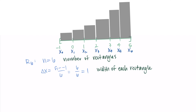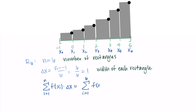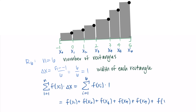The right Riemann sum formula is the sum from i = 1 to n of f(xᵢ) · Δx. We expect to use the right endpoints, so we don't use x₀ but we use the rest. Filling in: sum from i = 1 to 6 of f(xᵢ), multiplied by Δx = 1. Written out, since we're multiplying by 1 each time, we have f(x₁) + f(x₂) + f(x₃) + ... + f(x₆).